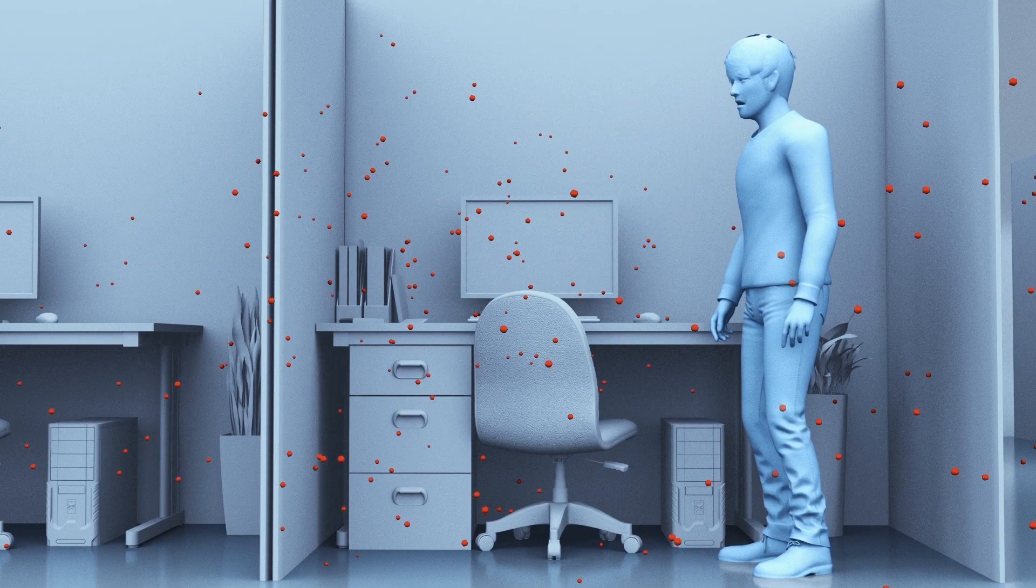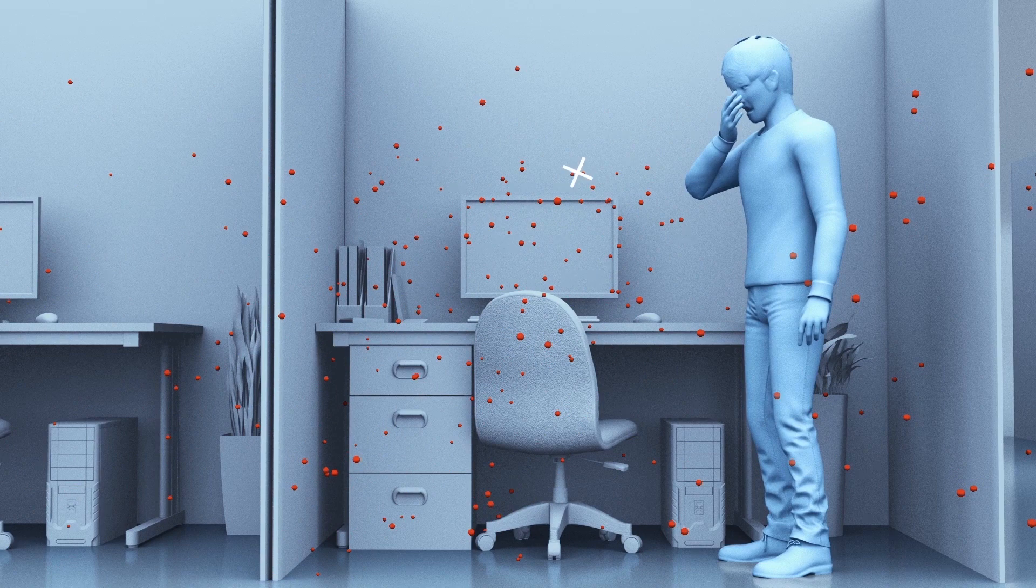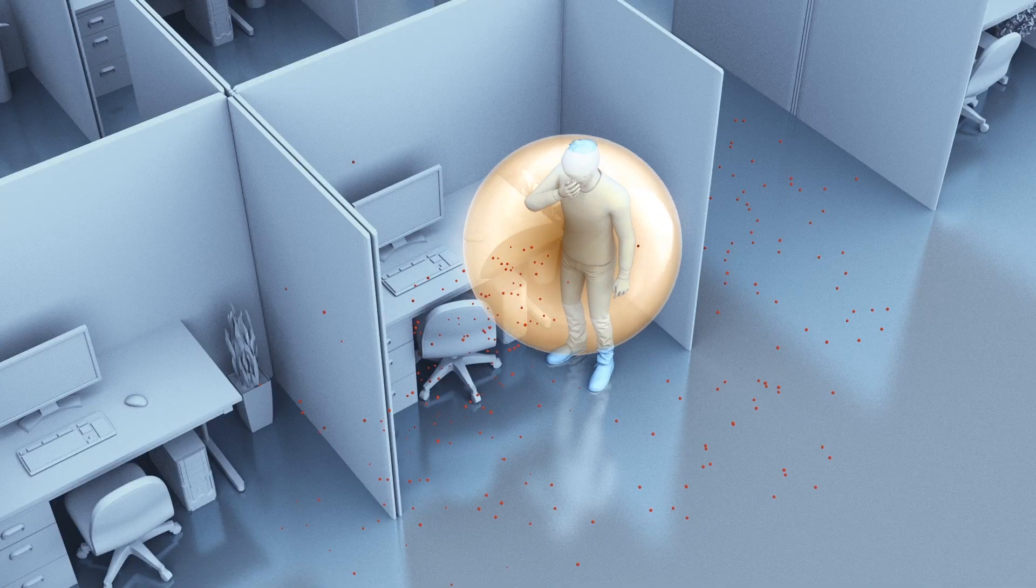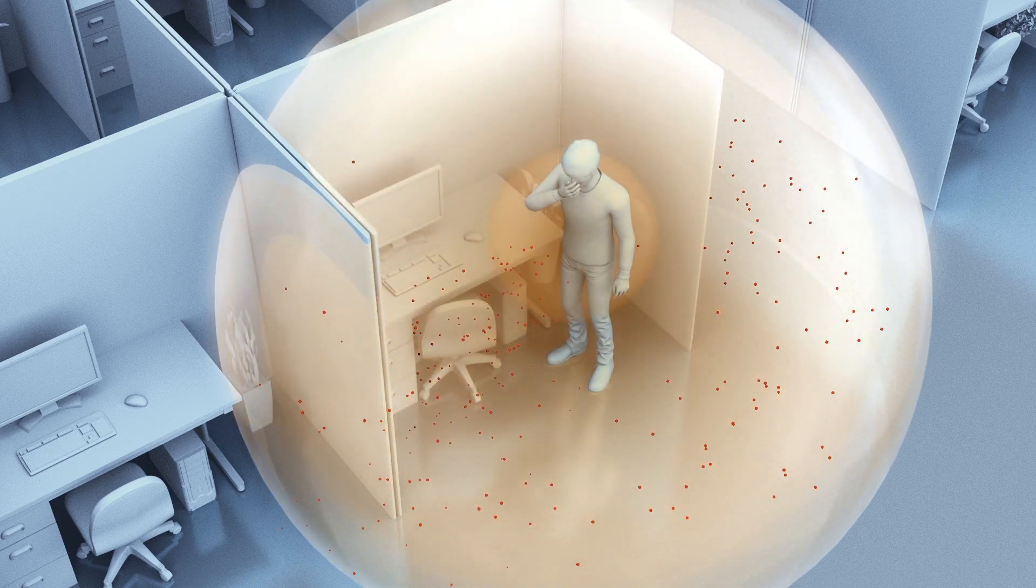Until now, most global health agencies have stated the primary route of transmission for SARS-CoV-2 is through respiratory droplets, up to one millimeter wide, that are expelled when people cough or sneeze.